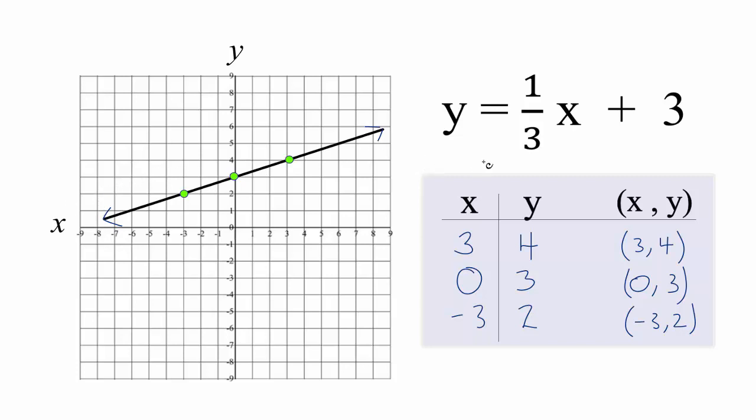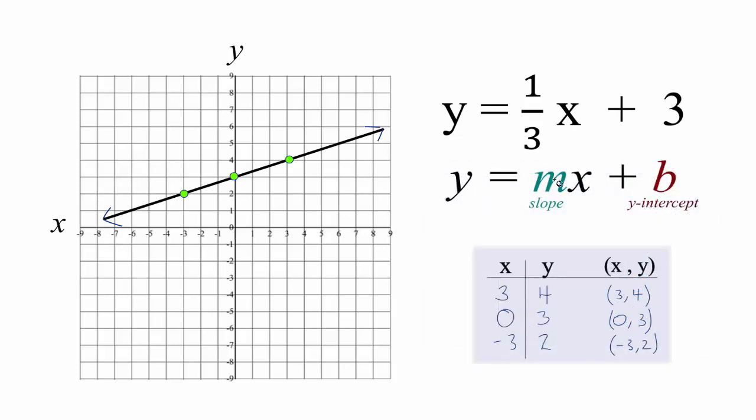Now we can use slope-intercept formula to check our work. So we have y equals mx plus b. B, that's the y-intercept and that's 3, so we can find 3 on the y-axis here, that's where the line should intercept and it does.